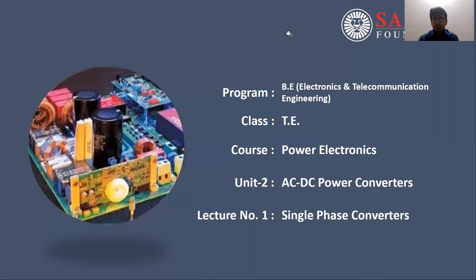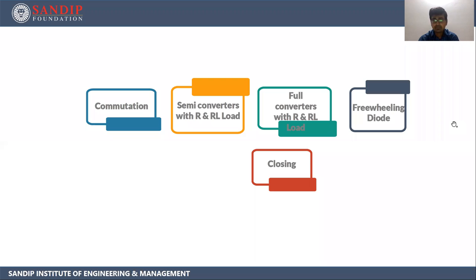Hello everyone. Today we are going to start with unit number 2 of power electronics subject. The name of this unit is AC to DC power converters. Our today's topic is single phase converters. In today's session, we are going to cover the following subtopics: commutation, semi-converters with R and RL load, full converters with R and RL load, and freewheeling diodes.